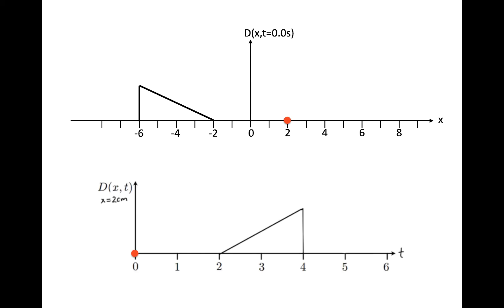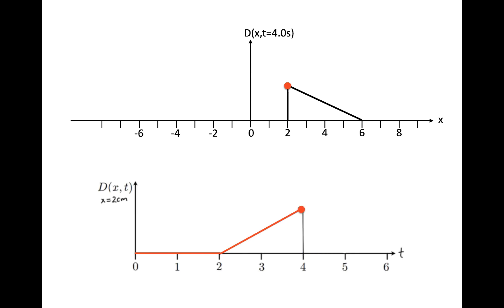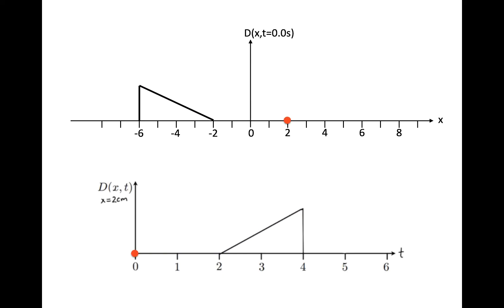So let's show that one more time. A lot of being able to do this is being able to think of what the pulse looks like as a snapshot graph and then plot what actually happens at a single position. Take a look at this a bunch — I think you just have to think hard about it and stare at it for a long time, truthfully. Thanks.